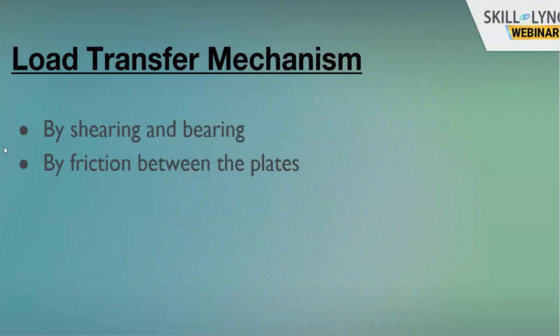With all these considerations in place, load is mainly transferred from the bolt to the connected plates through two mechanisms: shearing and bearing, and friction between the plates. We first need to understand how and where shear will act, and the animation in the next slide will help illustrate this.